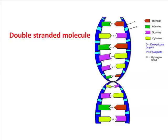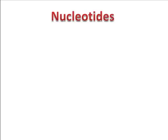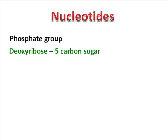DNA is a double-stranded molecule made up of two chains of nucleotides, and each chain makes up a polynucleotide, which makes the double helix shape that we all know as DNA. But what is a nucleotide made up of? A nucleotide is made up of three parts: a phosphate group, a five-carbon sugar called deoxyribose, and an organic base.